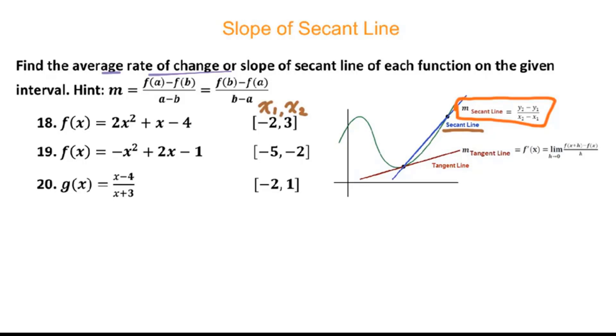We need y1 and y2. What's y1? That equals f of x1. Therefore we get f of negative 2. We plug into problem 18. That is 2 times negative 2 squared plus negative 2 minus 4. You will get 2 times 4 is 8 minus 2 minus 4. That equals 2.